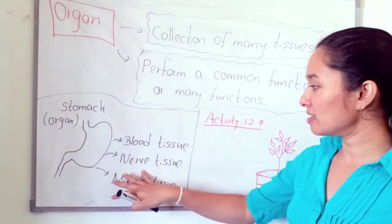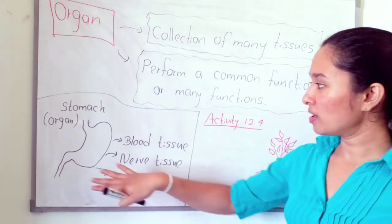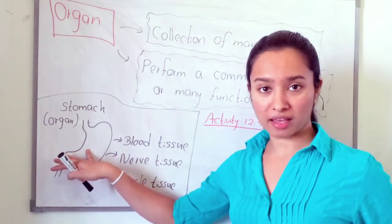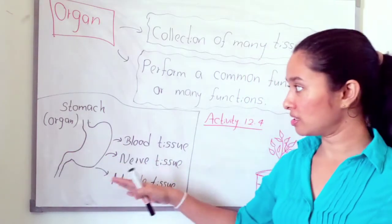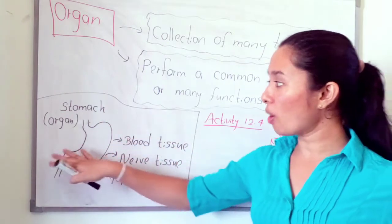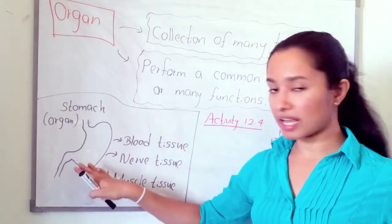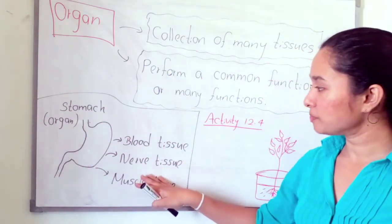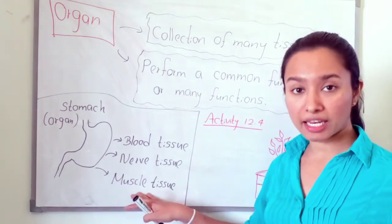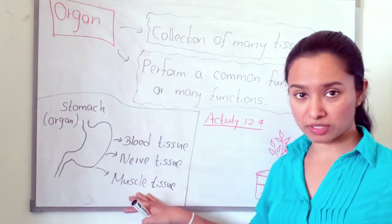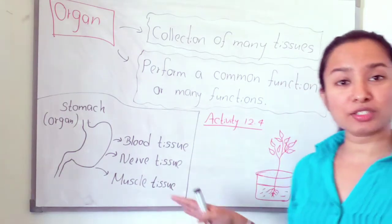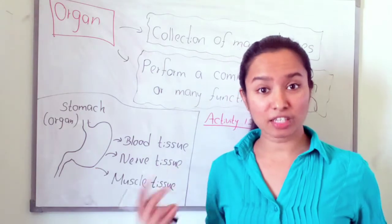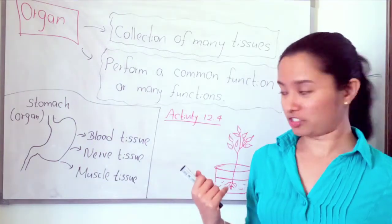These are the tissues of our stomach — that means animal tissue. The organ here is an animal organ. Now we are going to see what are the tissues in a plant.